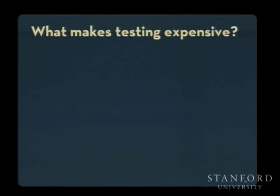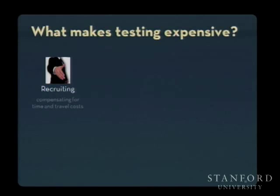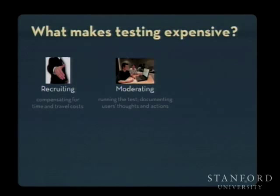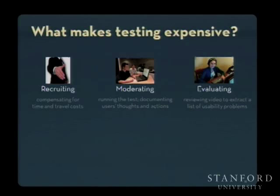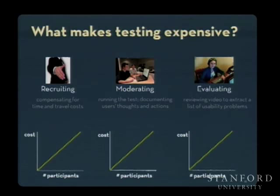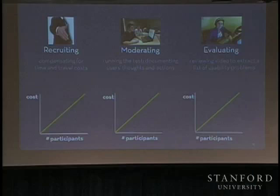Let's look more closely at what makes testing so expensive. There are three phases: first, recruiting participants — we have to compensate them for time and travel. Second, moderating the test — running it one-on-one with each participant. Third, analyzing the results — reviewing video and figuring out what difficulties were encountered. The problem is that all three phases are linear in the number of participants, and since human beings are involved, the scaling factors are quite high — it can cost thousands of dollars per participant.